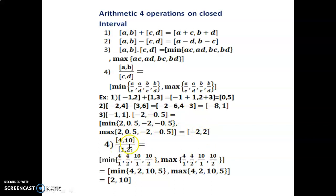Division example: [4, 10] ÷ [1, 2]. Compute min(4/1, 4/2, 10/1, 10/2) = min(4, 2, 10, 5) = 2; max = 10. So the answer is [2, 10].